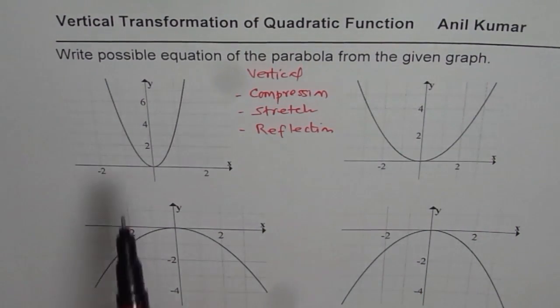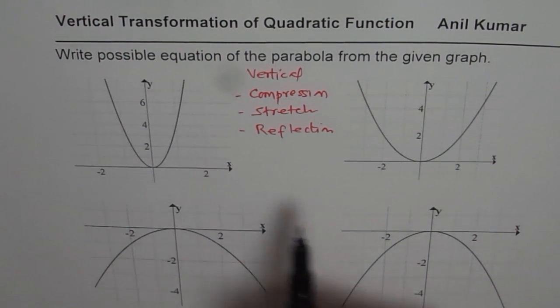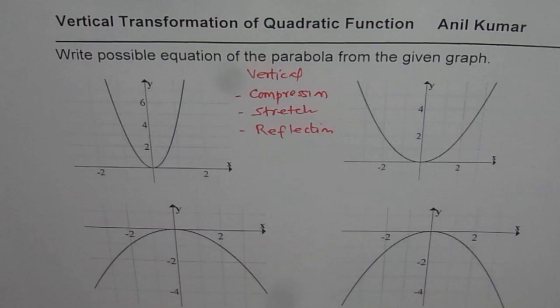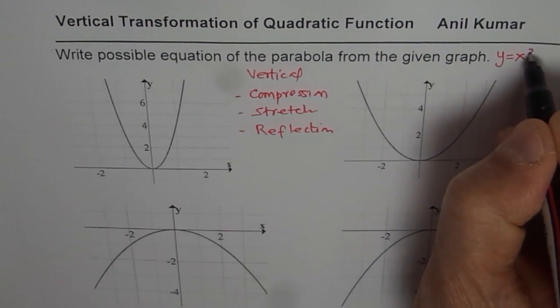What we have is a set of four graphs. We need to find equation of the transformed function. When we are saying transformed function, we are comparing with the base function y equals to x squared.